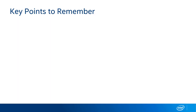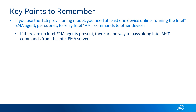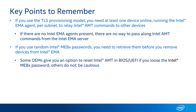Let's wrap up with a few key points to remember. First, if you're going to use the TLS provisioning model instead of CIRA, you'll need at least one device online at all times running the Intel EMMA agent per subnet to relay Intel AMT traffic to other devices. If you have all your devices turned off on a particular subnet, there'll be no way for the Intel EMMA server to relay commands to those devices. Next, if you choose to use random MEBX passwords when you configure AMT, make sure you have a copy of that password before you remove the device from Intel EMMA. When you stop managing a device, the record — including that password — gets deleted. Depending on the OEM, you may not have an option to reset that password or reset Intel AMT.